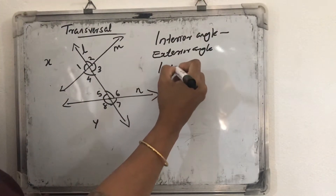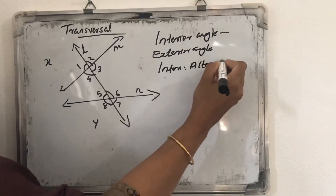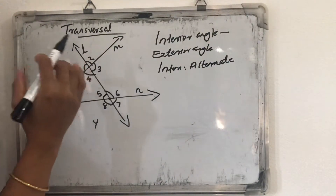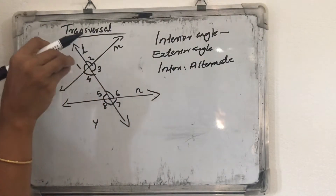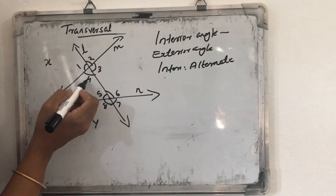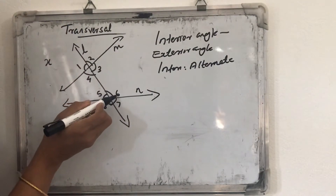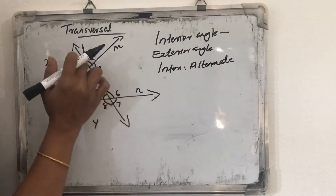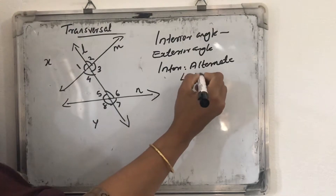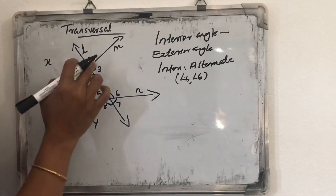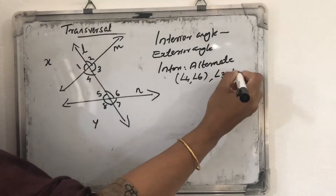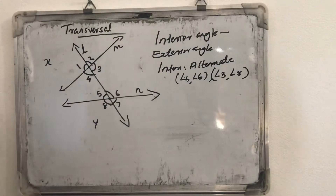Next is interior alternate angles. What is interior alternate angle? Alternate means on the other side. Interior alternate angles are always named as pairs. If you take interior angle 4, its interior alternate angle will be angle 6. Angle 6 is also interior, but it is on the other side of the transversal. So those two angles form one pair of interior alternate angles: angle 4 and angle 6. Another pair of interior alternate angles is angle 3 and angle 5.